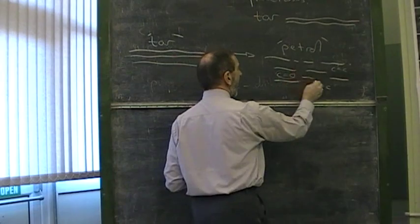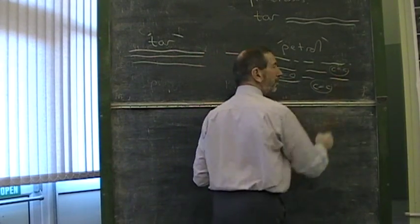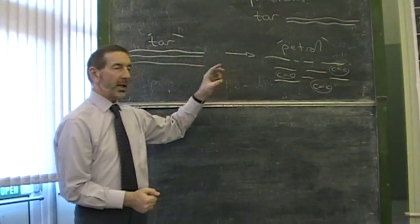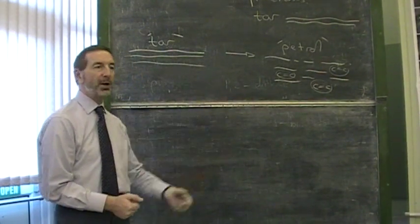In this process, the alkenes, the double bonded molecules, are not the main product. The main product is the petrol. The alkenes are a sort of spin-off, a sideline.